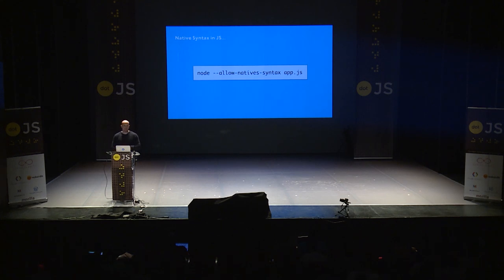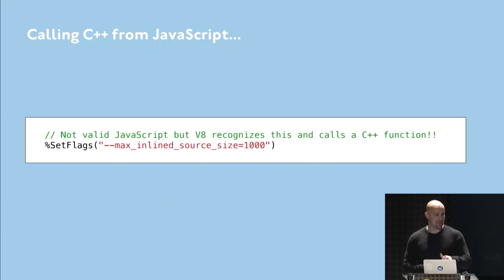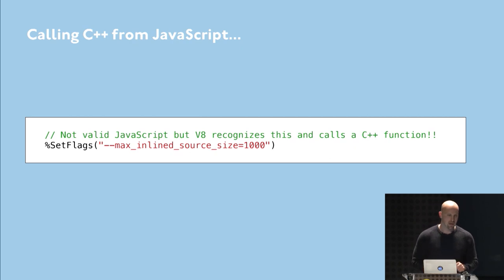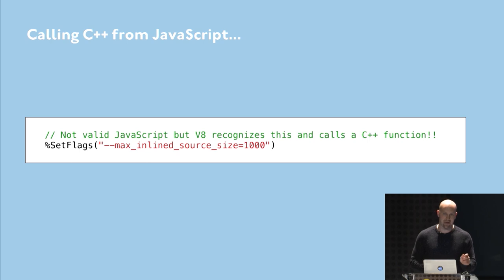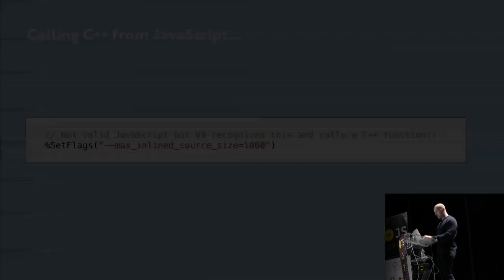There's another really cool flag you can set with V8 called allow_native_syntax. What this does is it enables you to actually call out to C++ functions from within your Node.js application itself. So inside your JavaScript file, we can call this percent set_flags method and pass in the same thing that we just passed in from the command line, but within the actual JavaScript function. So again, some dynamic tuning of V8 actually while it's running.